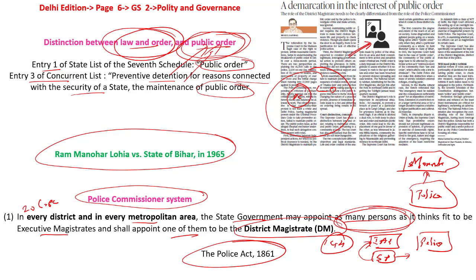So on one side you have public order clearly under the hierarchy of the district magistrate who is usually the IAS officer, and on the other side you have crime, which is the arena of the police officers. There are clear-cut compartments and dual control when it comes to the police officer. Now, to overcome certain issues in urban areas and to give the power of public order back to the police officer in a metropolitan area, what governments have established is called the commissioner system. This commissioner system gives the police commissioner the same role previously played by district magistrates.